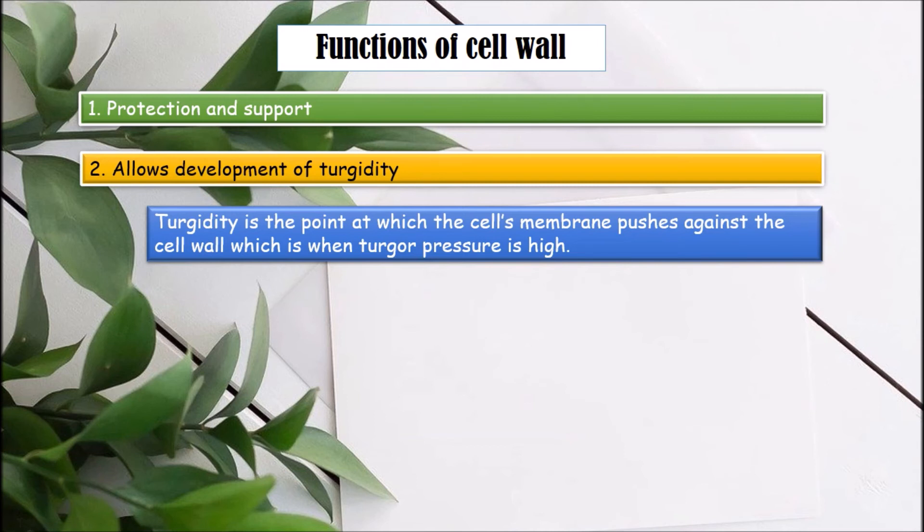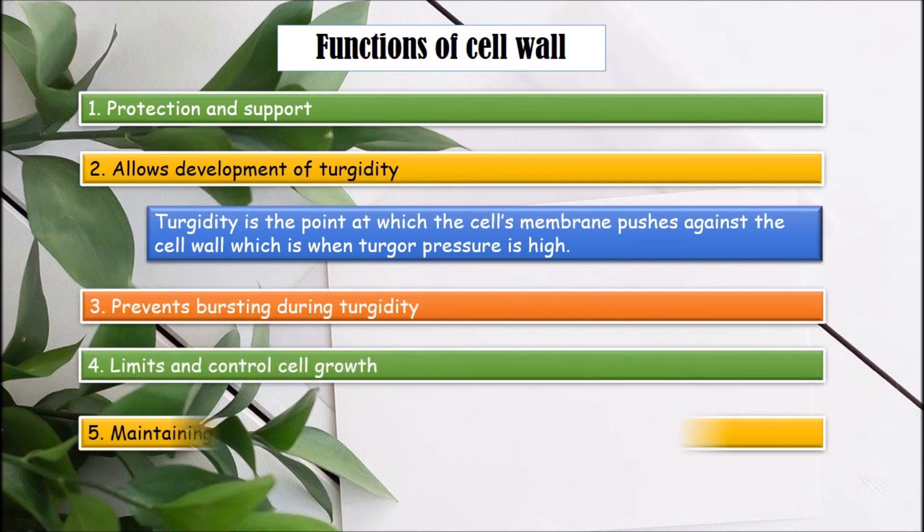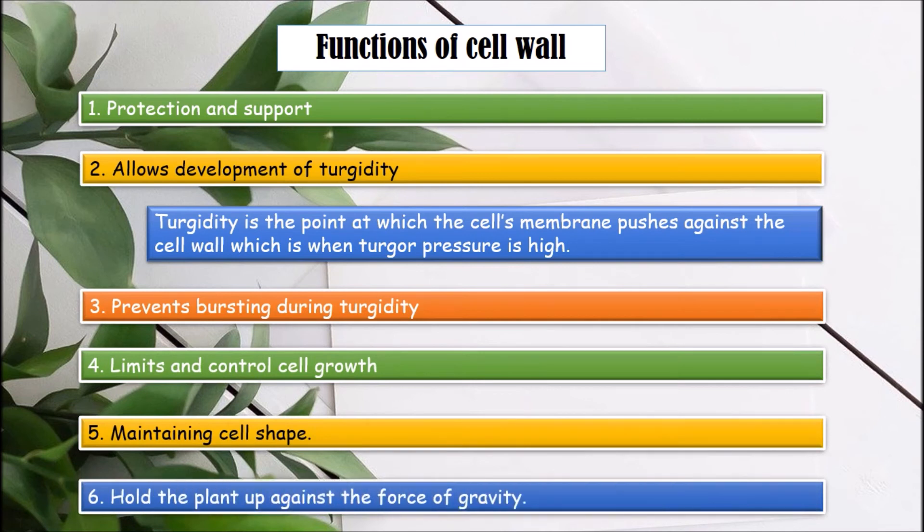The apparent rigidity of primary plant tissues is enabled by cell walls. Third, prevent bursting during turgidity. The flexibility of the cell wall, meaning that it will bend rather than holding a fixed shape, helps to prevent bursting the cell when water flows more and more into the cell.